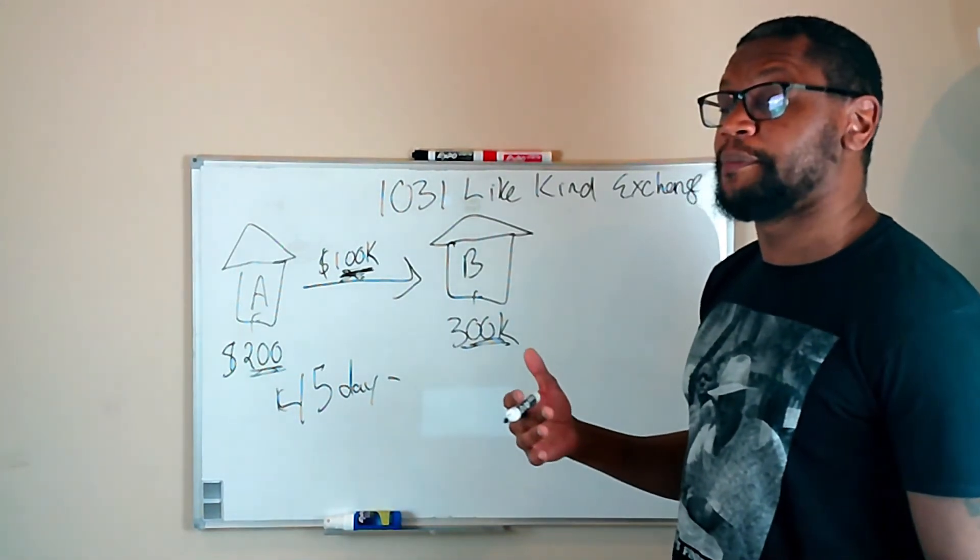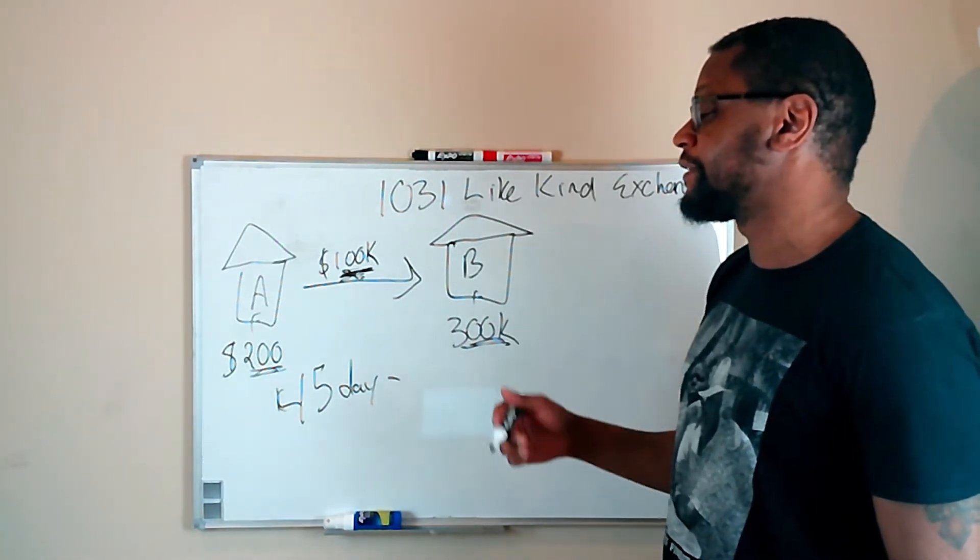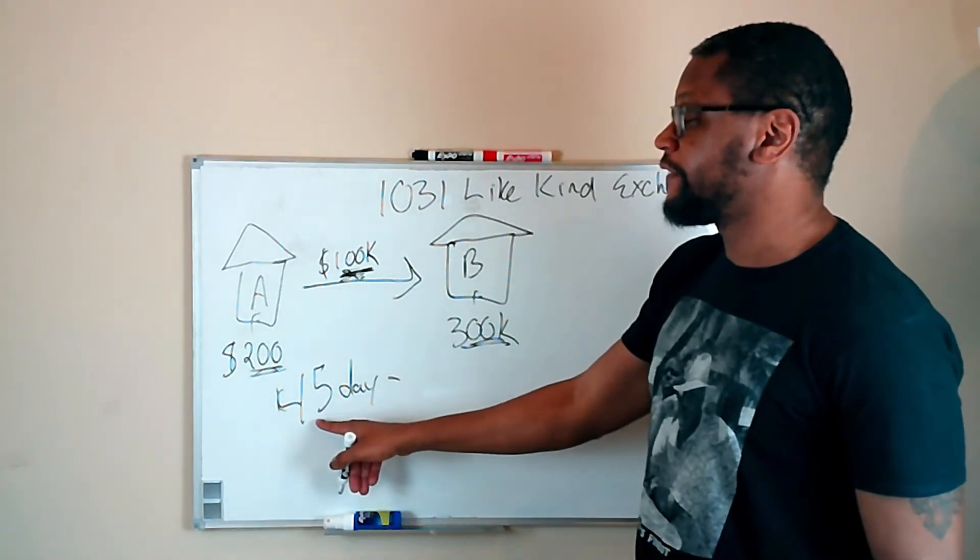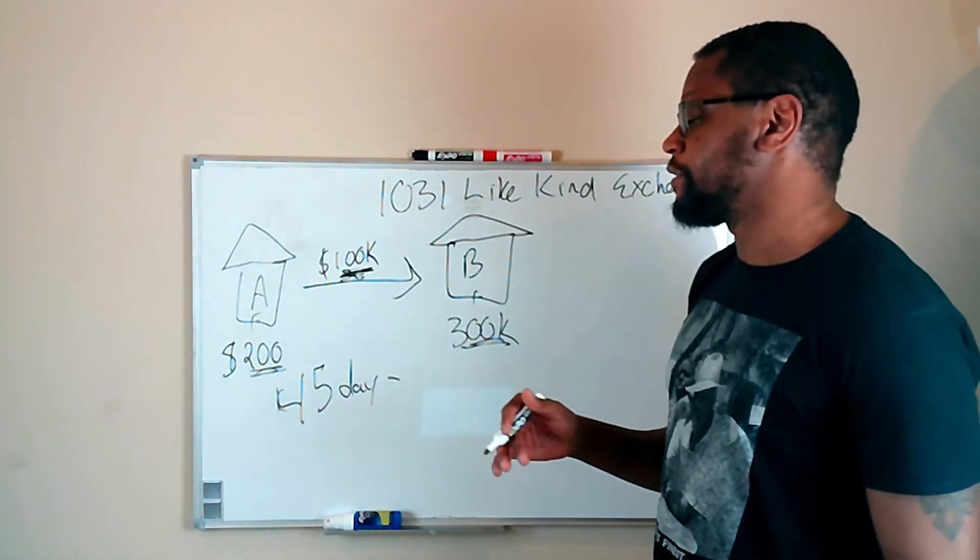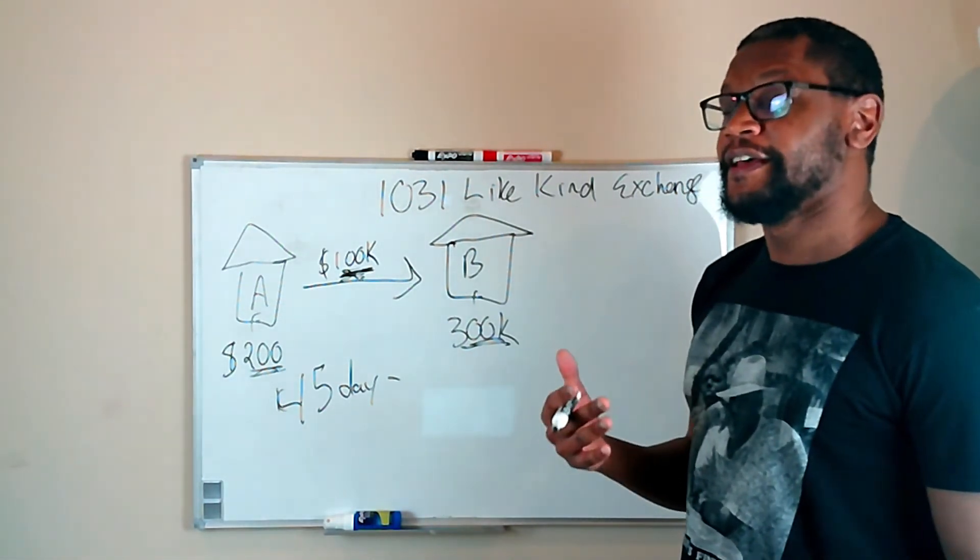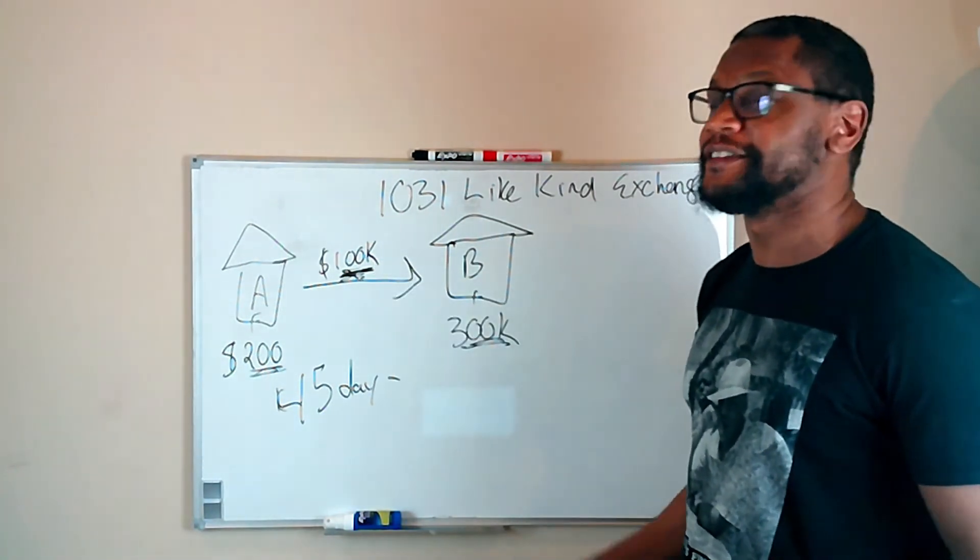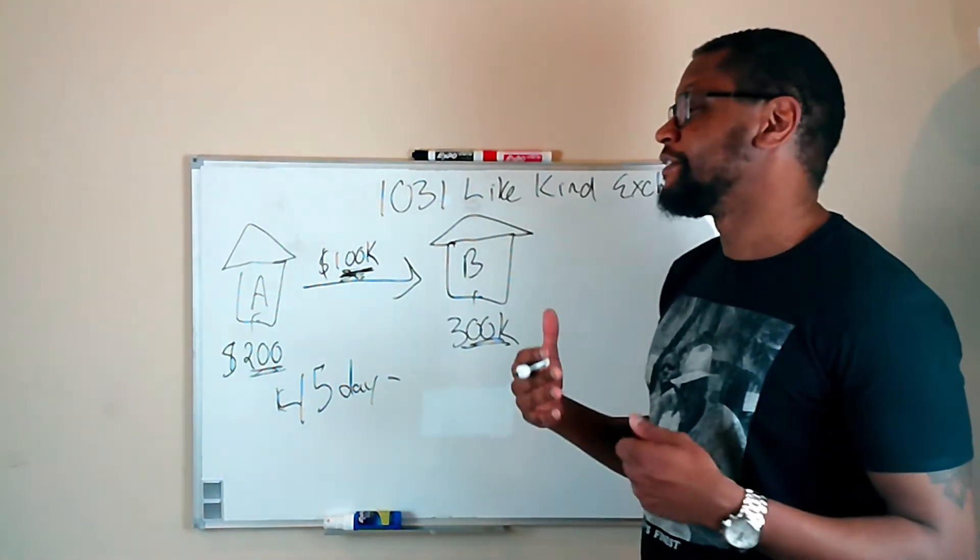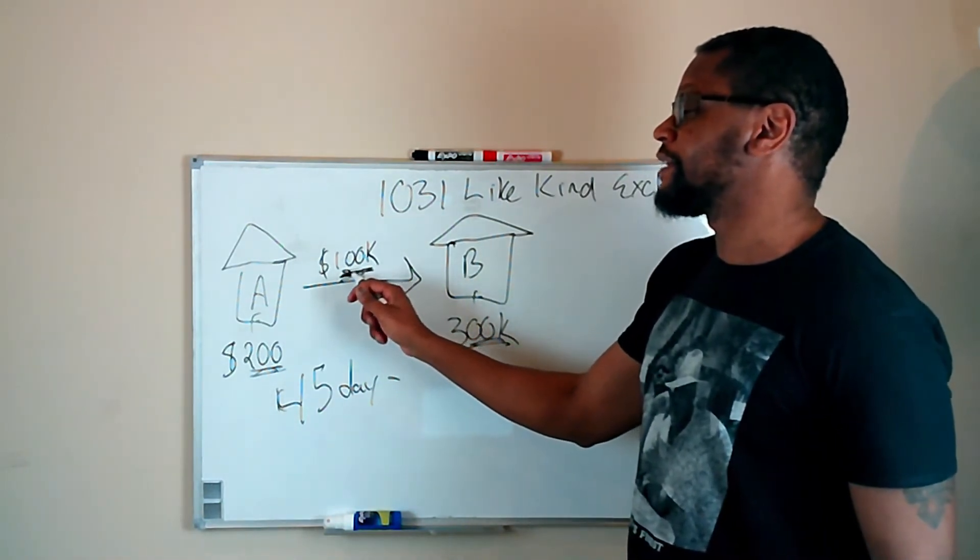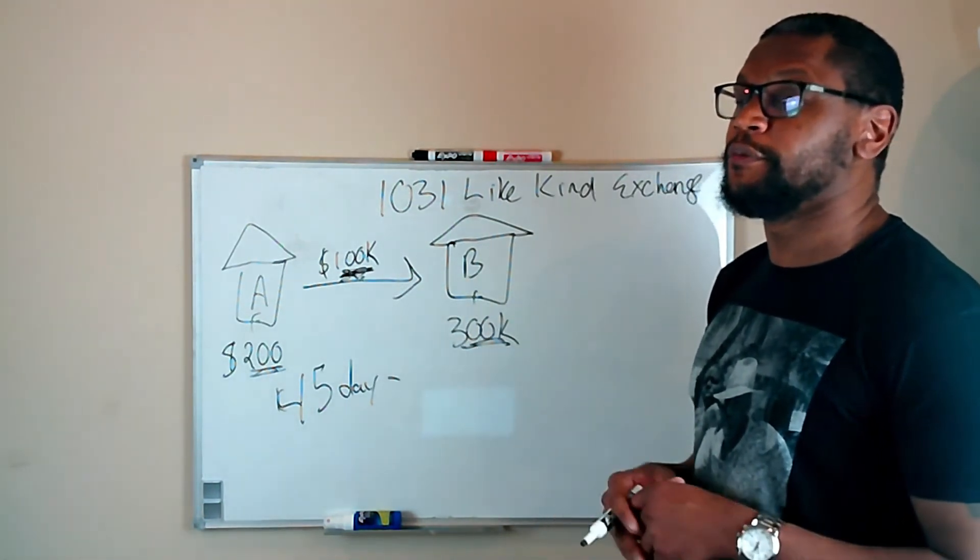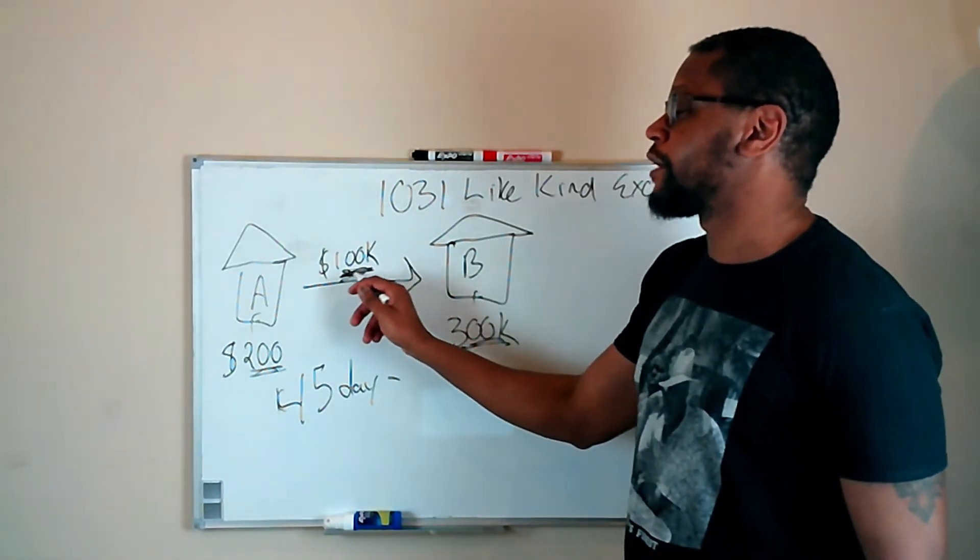You also have to inform a 1031 custodian that, hey, this is the property I intend to purchase. So you have 45 days from the date of closing to identify a property. Okay. Now, 1031 custodian, IRS, you have to identify the property to them. Essentially what a 1031 custodian is, is you can't hold this $100,000 in your bank account because you may get tempted to just go out and buy new bins or go to Vegas and blow it all. This $100,000 has to be held with a 1031 custodian. Essentially a 1031 custodian is a third party who is required to hold these funds.